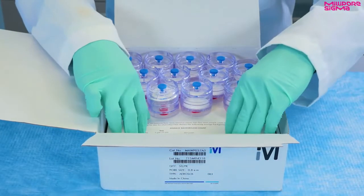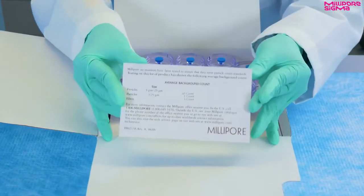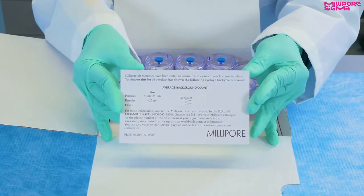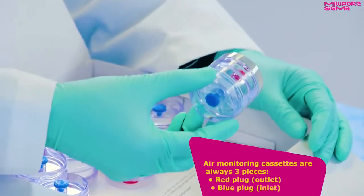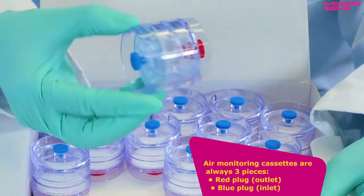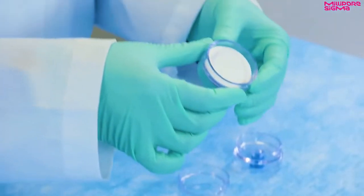Each box contains 50 air monitors. Each box also contains average background particle count information for that specific lot. Air monitoring cassettes are always three pieces with a red plug on the outlet and a blue plug on the inlet.